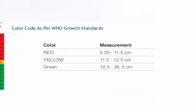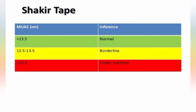Now let us discuss the different color codes as per WHO growth standards. If the color is red, the measurement is 0 to 11.5 centimeters. If the measurement is 11.5 to 12.5 centimeters, the color will be yellow. If the measurement is 12.5 to 26.5 centimeters, the color code will be green.